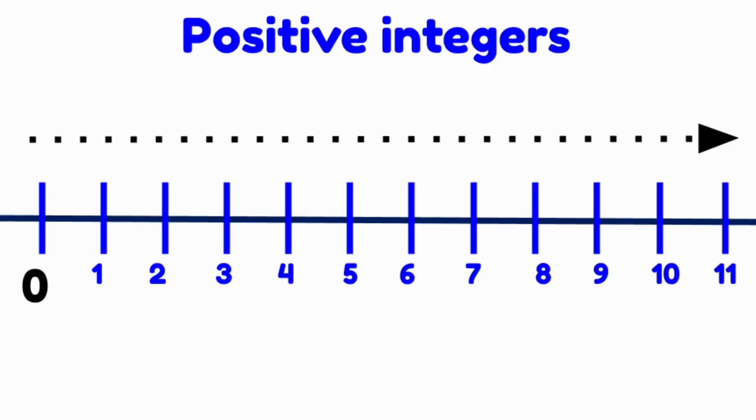We already know how to use a number line starting at zero and continuing on to the right indefinitely. These are what we call positive numbers and we use them to count a quantity or to measure how much of something we have.